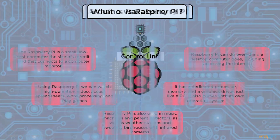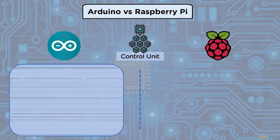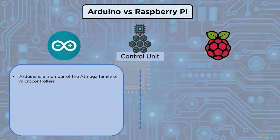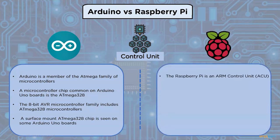Let us look at the comparison between Arduino versus Raspberry Pi, starting with the control unit. Arduino is a member of the ATmega family of microcontrollers. A common microcontroller chip on Arduino Uno boards is the ATmega 328, which belongs to the 8-bit AVR microcontroller family. A surface-mount ATmega chip is seen on some Arduino Uno boards.